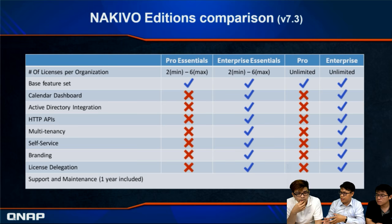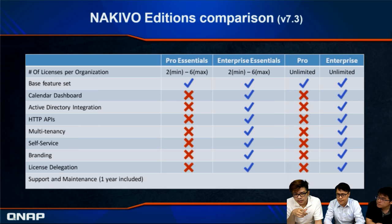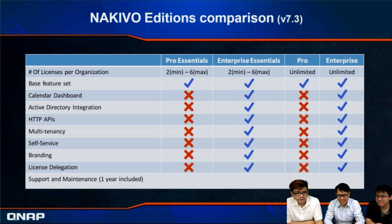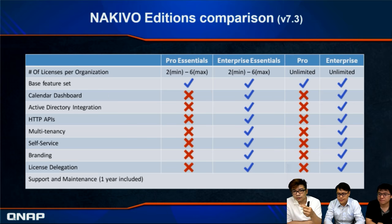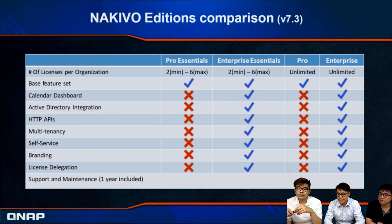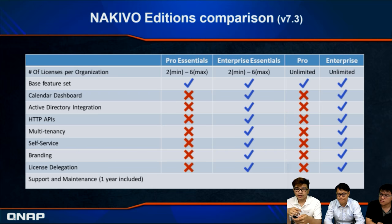The self-service feature lets department managers handle their own maintenance via the multi-tenancy function. White-label branding lets you change the logo. There's also a license delegation function on the Enterprise Essential and Enterprise versions. You can download Nakivo from the QNAP App Center for free to try it, but for full licenses, you need to contact a Nakivo reseller in your country.